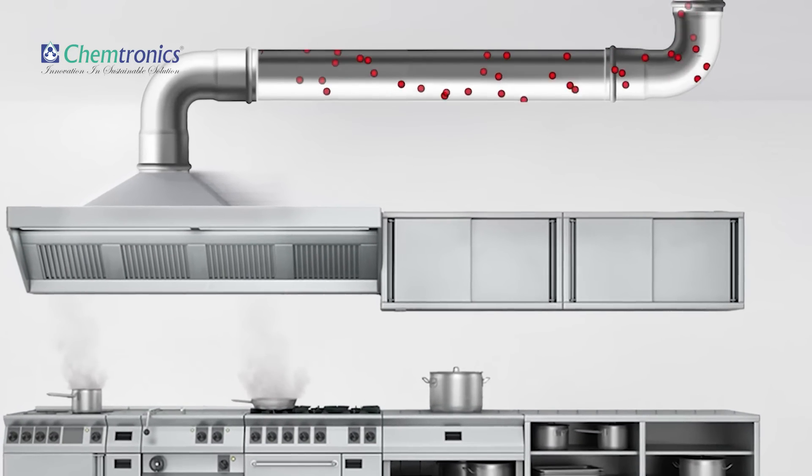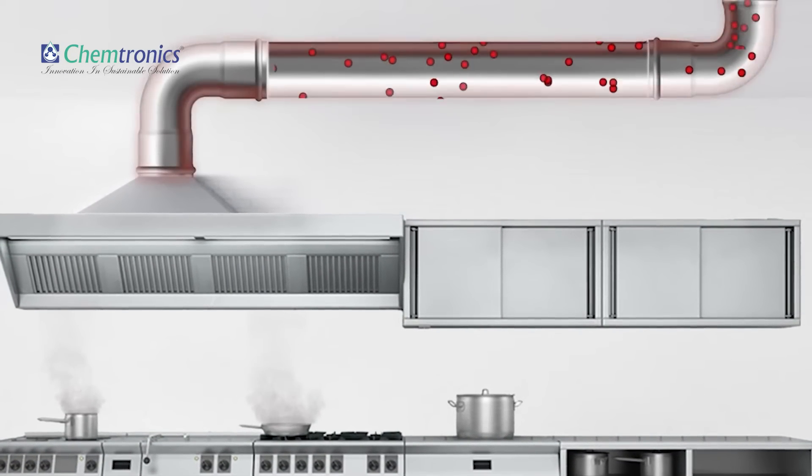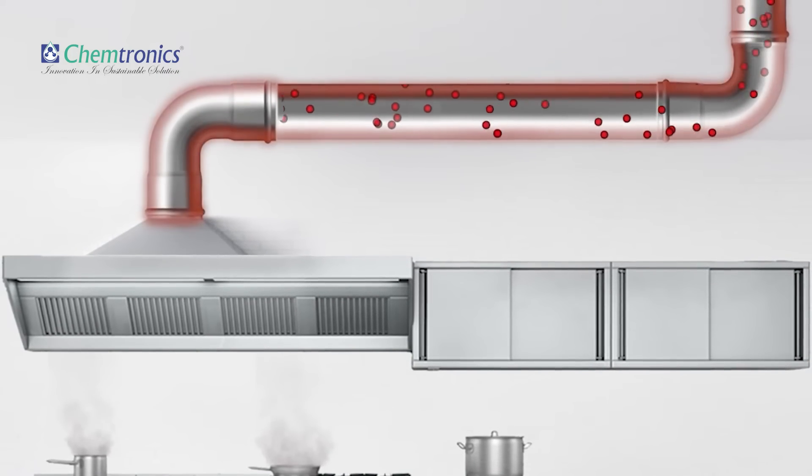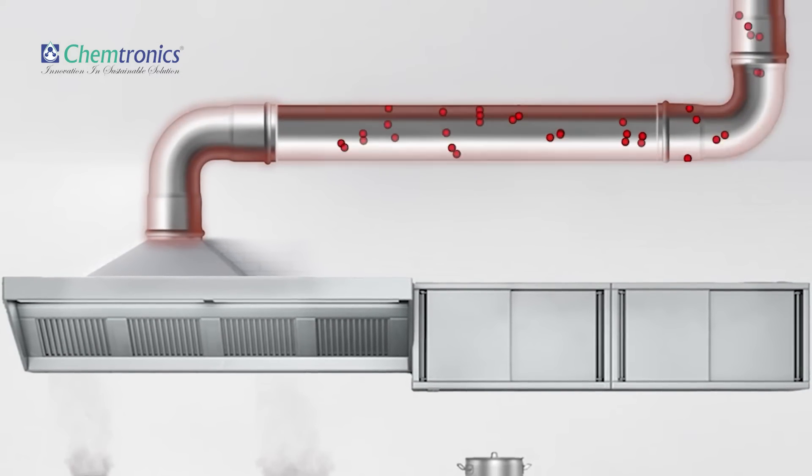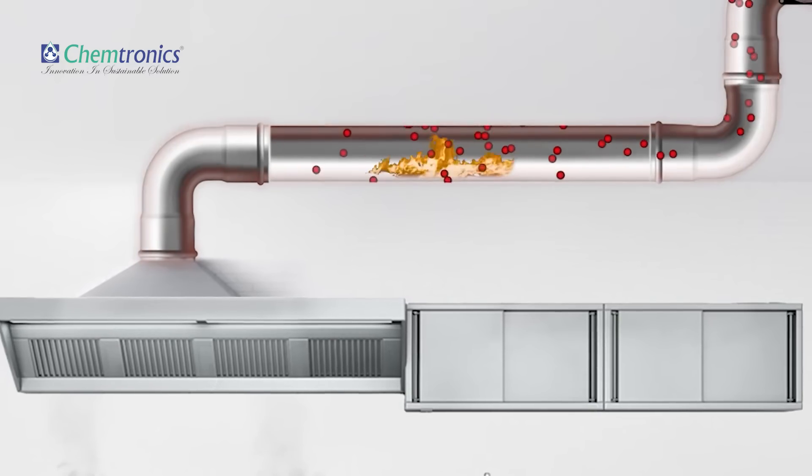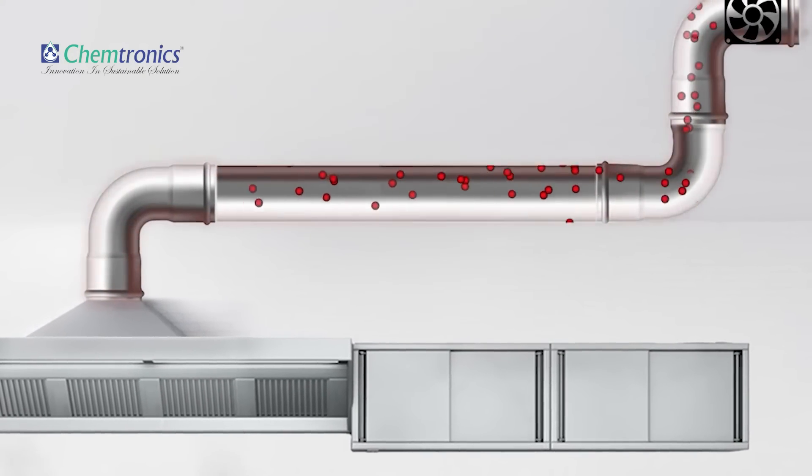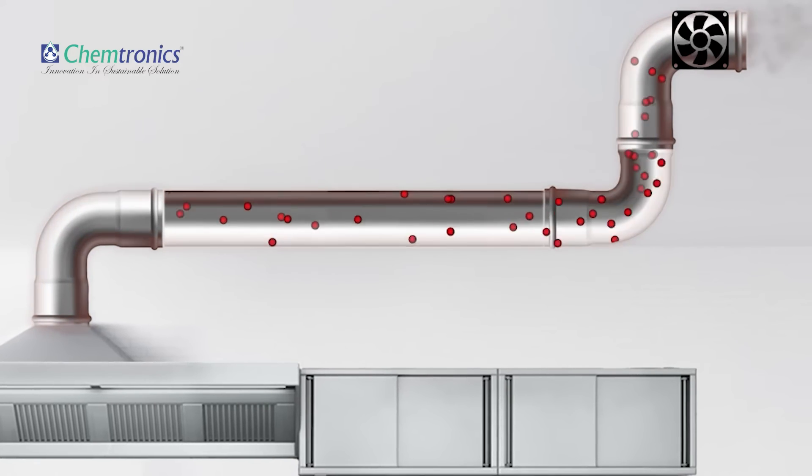In commercial kitchens, oil and grease gets stuck to the kitchen hood and exhaust duct. This makes the duct messy and dangerous, as it can catch fire from the discharge end. Cooking odor also spreads in the surroundings, causing nuisance.